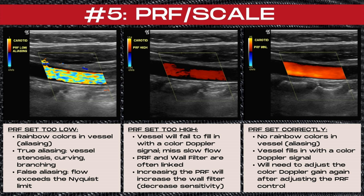True aliasing is caused by vessel stenosis, curving, branching, or turbulence. False aliasing occurs when flow exceeds the Nyquist limit or angles over 60 degrees are used. In the middle image, the PRF is set too high — the vessel fails to fill in with a color Doppler signal, and this can also miss slow flow states. It's important to note that the PRF and wall filter are often linked on many ultrasound machines, so increasing the PRF also increases the wall filter, which decreases Doppler sensitivity. In the image to the far right, the PRF is set correctly — there are no rainbow colors within the vessel and the vessel is filling in with a color Doppler signal. Note that you'll need to adjust the color Doppler gain again after adjusting the PRF control.